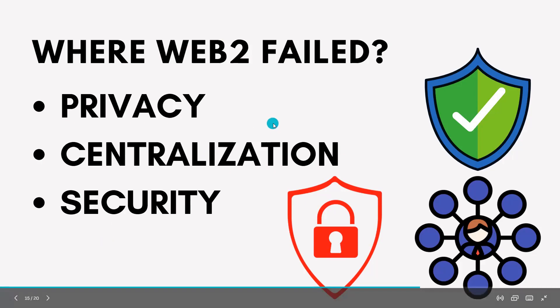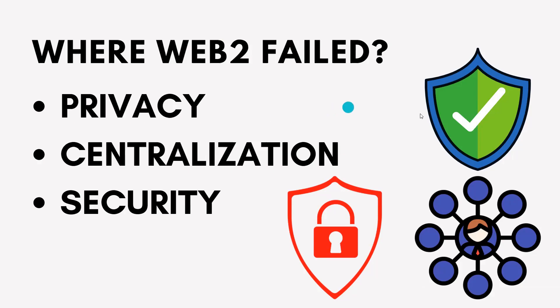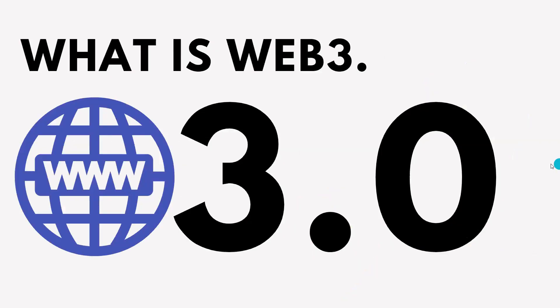So these were some of the major concerns where Web 2 failed: privacy, centralization, and security.